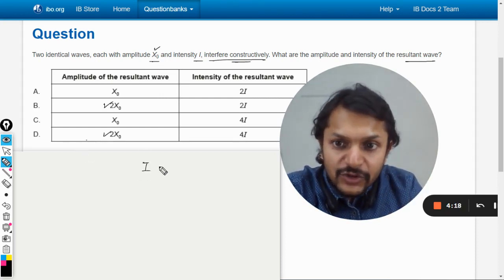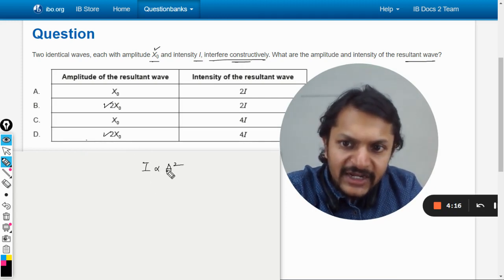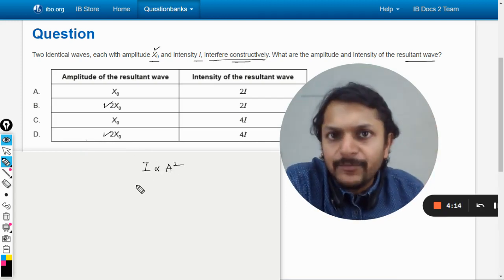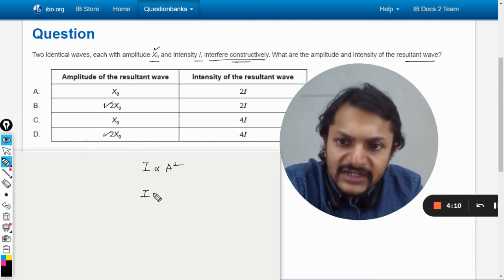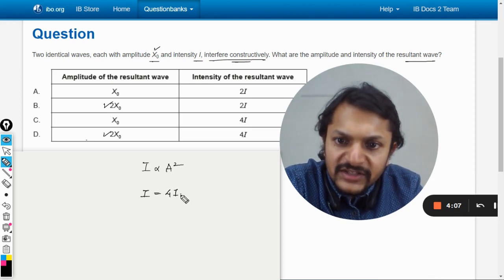And there is another thing that we know that intensity is directly proportional to the square of the amplitude. So, now the amplitude is double. So, it only means that the intensity now becomes four times of the initial intensity.